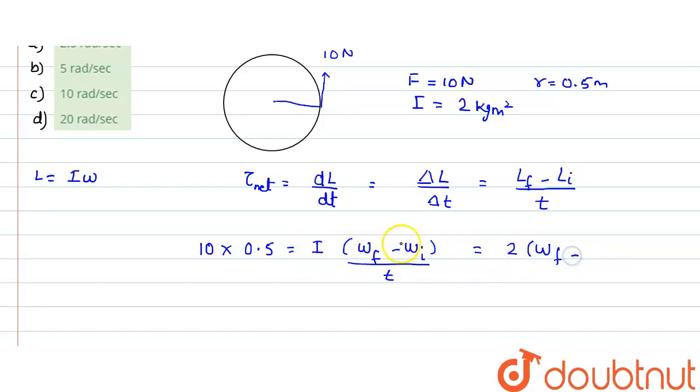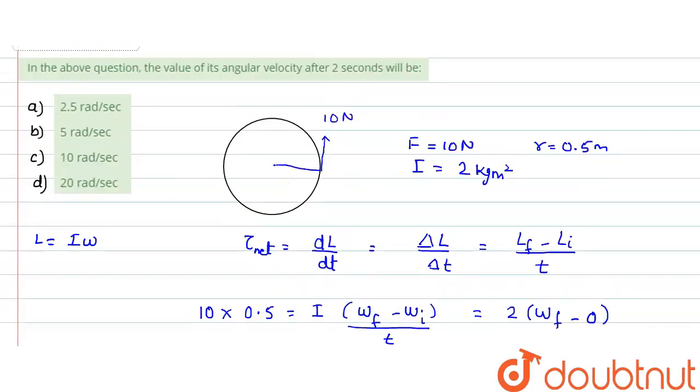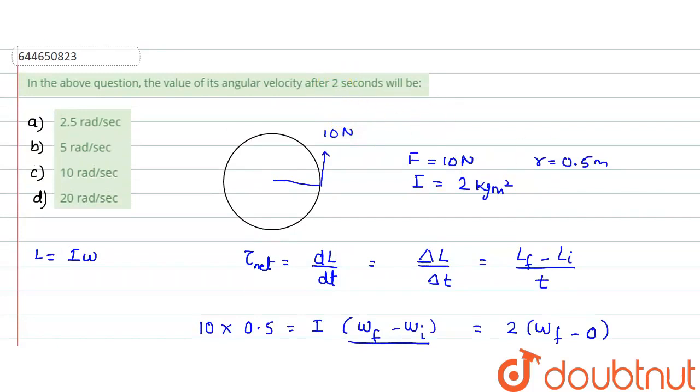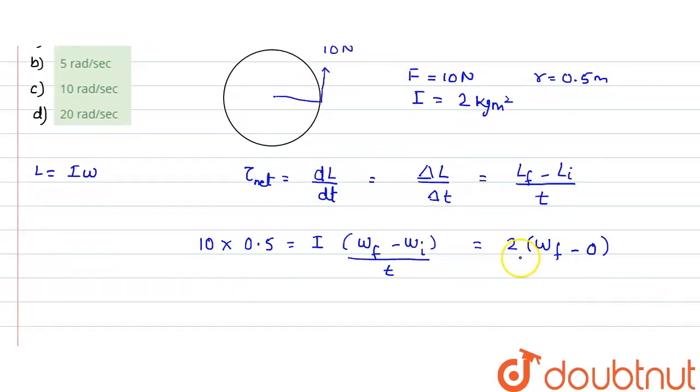If we substitute the values, I value is 2, ωf we need to find, ωi initially the system was at rest so we put this value as 0. The time is 2 seconds, so we divide by 2. This 2 and this 2 would be cancelled. 10 times 0.5 would be 5, so our ωf would turn out to be 5 radians per second.